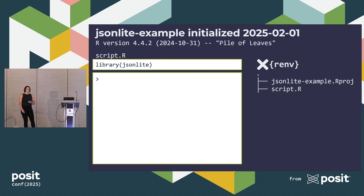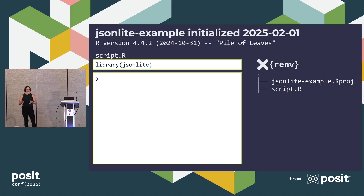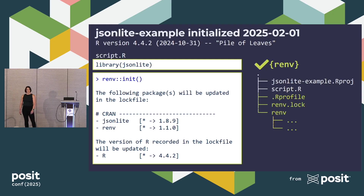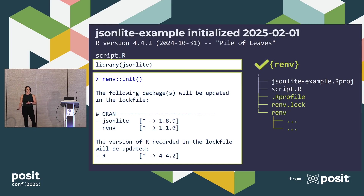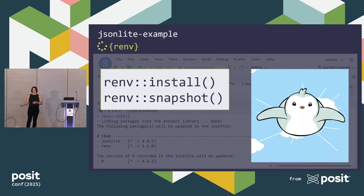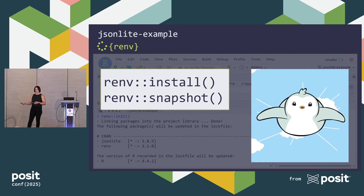Here's an example project I'll call JSON Lite Example, initialized in February of this year. At this point, RNV is not activated. I have an rproj file and a single file called script.r with one line: library JSON Lite. I can initialize RNV with renv init, and I get the message that I'm recording versions of R and packages in my lock file. In my project directory, I additionally get a .rprofile, an renv.lock, and an renv directory. When iterating on this project, I'll do some combination of installing new packages and snapshotting to record those to my lock file.